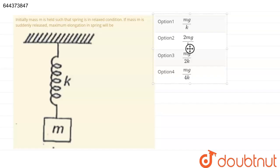In this question, it is given initially mass M is held such that the spring is in the relaxed condition. If the mass M is suddenly released, maximum elongation in the spring will be. We have to find the maximum elongation in the spring.